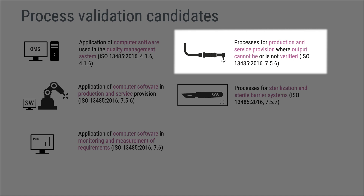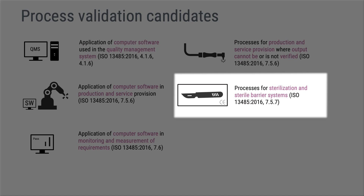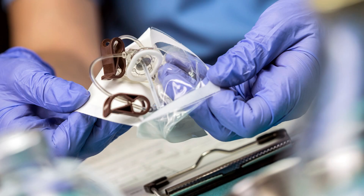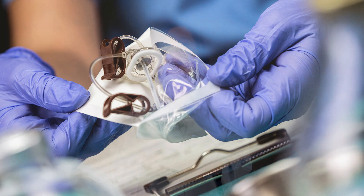Switching over to the other category that requires validation: production processes where the output cannot be verified, or where you have chosen not to verify it. ISO 13485 clause 7.5.7 specifically calls out processes for sterilization and sterile barrier systems. Some products must be sterile so that we don't give people infections. There is no way to tell that the product is sterile without making it unsterile by opening the packaging. Similarly, you cannot verify a welded pouch without tearing it open — much like the match example at the beginning of this video, where you cannot verify it without destroying it.